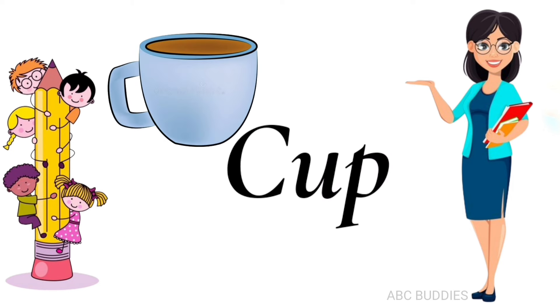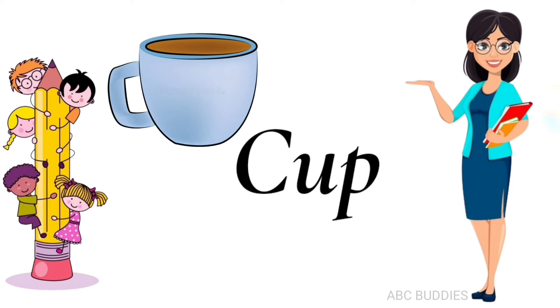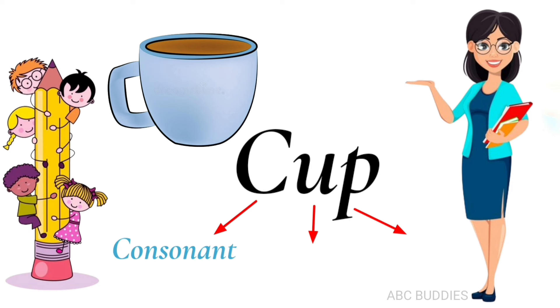Another example is cup. C, U, P — Cup. Here, C is a consonant, U is a vowel, and P is a consonant.